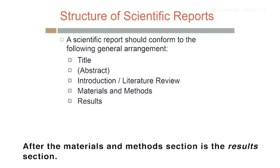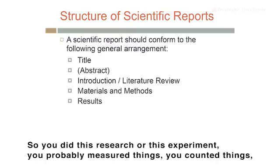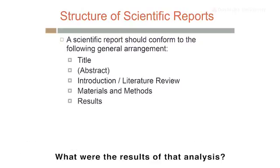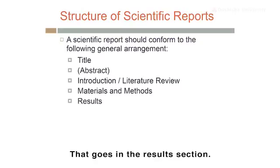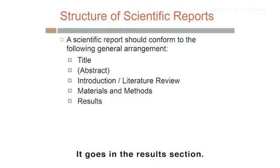Then comes a new section known as either Materials, or Materials and Methods — sometimes just called Method. The Materials and Methods section presents what you did. You did some research, you did an experiment, and you're writing a report — well, what exactly did you do? The reader needs to know in order to understand what it is they're reading. That goes in the Materials and Methods section, not in the introduction. Notice that there's a very clear arrangement of information.